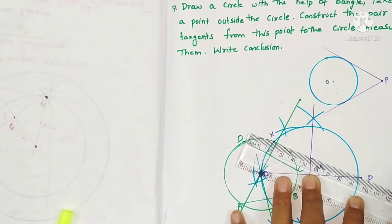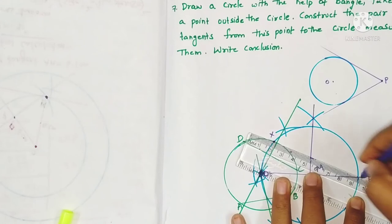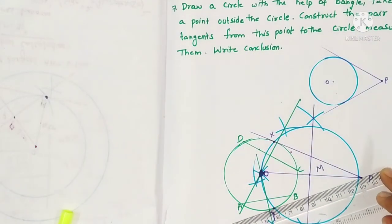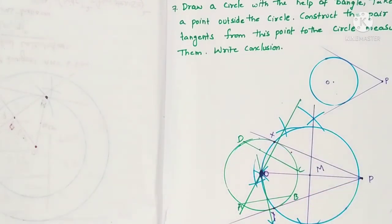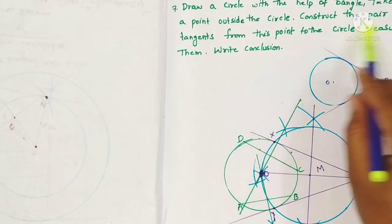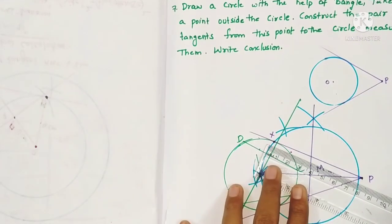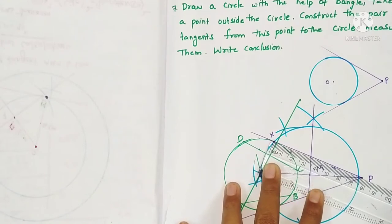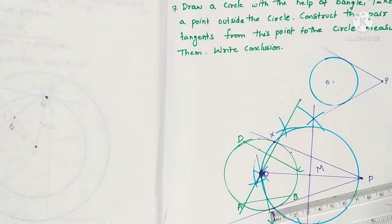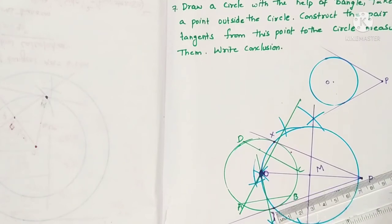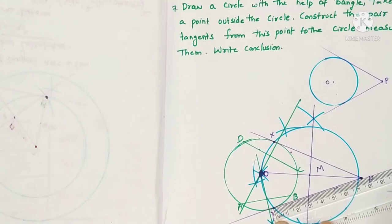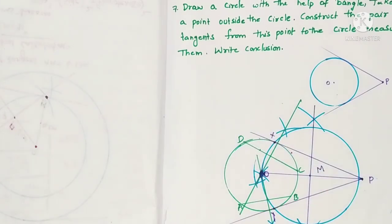Join P to X and P to Y — these are the required tangents. PX and PY are the required tangents. Measure them: PX measures 7.5 cm, and PY also measures 7.5 cm.